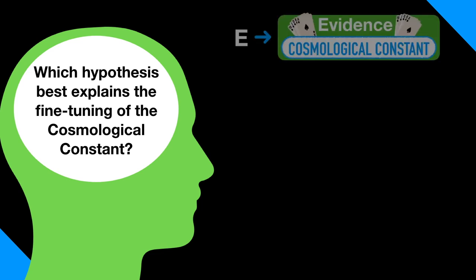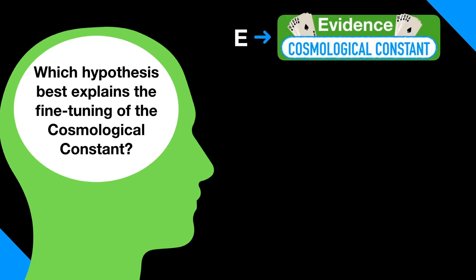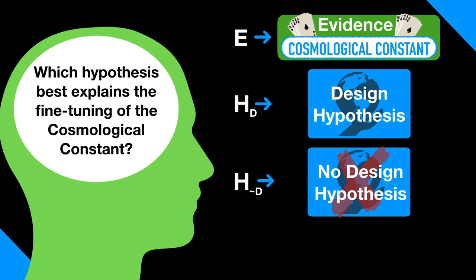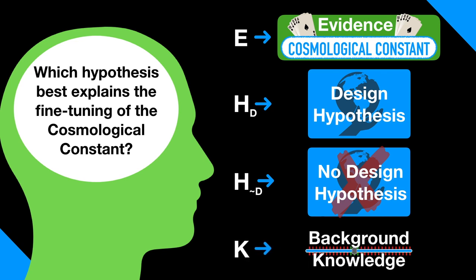Bayes' theorem can help. Let E represent our evidence, the fact that the cosmological constant falls within the very narrow, life-permitting range. Let HD represent the hypothesis that an intelligent being was involved in the production of our universe. Let H-not-D represent the hypothesis that it is not the case that an intelligent being was involved in the production of our universe.